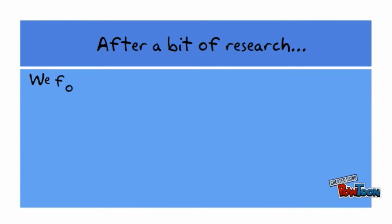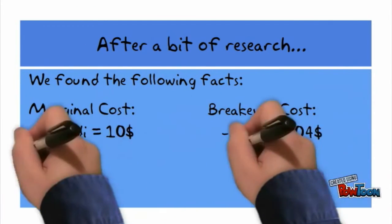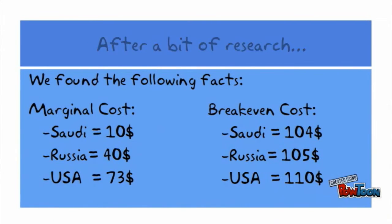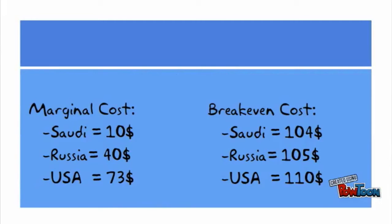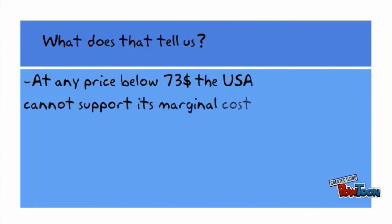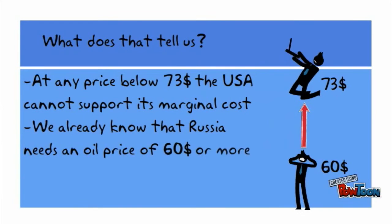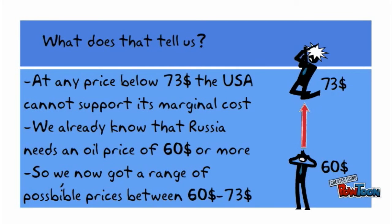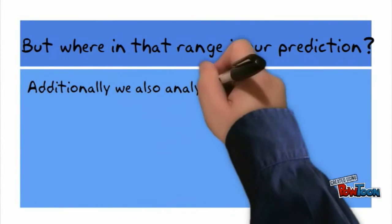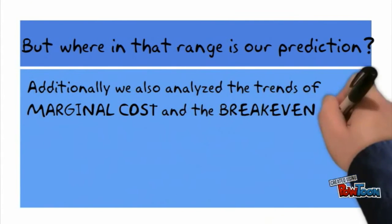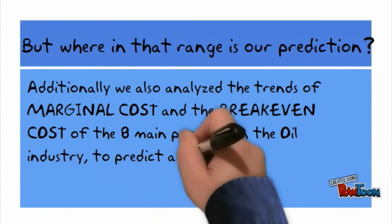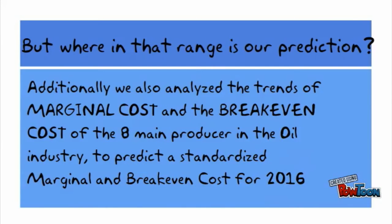After a bit of research, we found that the marginal cost of USA oil is much higher than Saudi Arabia's or Russia's. This tells us that at any price below $73, the USA cannot support its marginal cost. We already know that Russia needs an oil price of $60 or more. So we now have a range of possible prices between $60 and $73. Additionally, we analyzed the trends of marginal cost and break-even cost of the eight main producers in the oil industry to predict a standardized marginal and break-even cost for 2016.